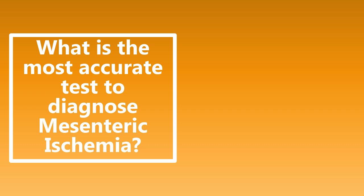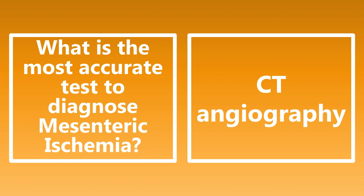What is the most accurate test to diagnose mesenteric ischemia? You have to be sure that you're reading these questions very slowly — they might ask about the best initial test, the most accurate test, or the gold standard test, and these can all be different things. The most accurate test to diagnose mesenteric ischemia is CT angiography, a CTA of the abdomen and pelvis, because this is the best exam to diagnose arterial occlusive disease, which is essentially what mesenteric ischemia is.